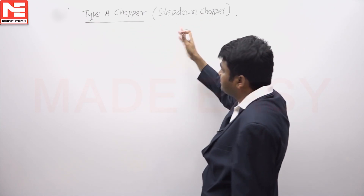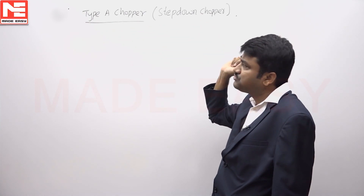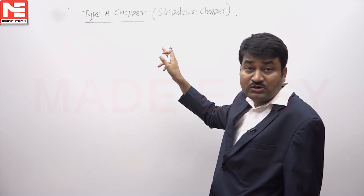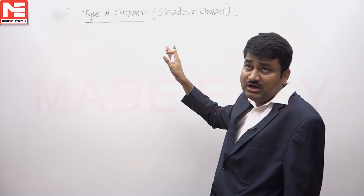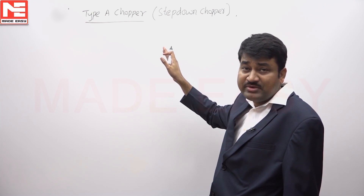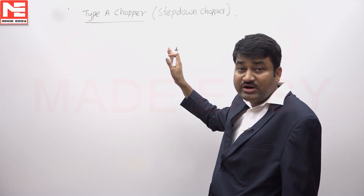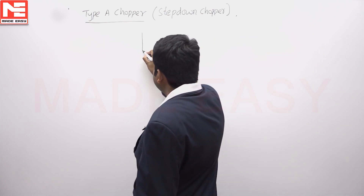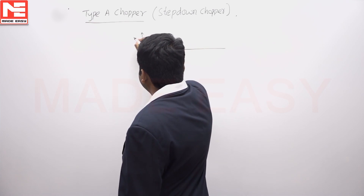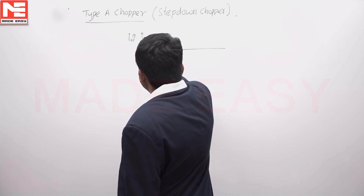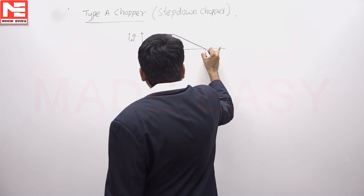A step-down chopper, also known as a Type-U chopper. We have to find the value of duty cycle at which the load current is just continuous. Load current is just continuous means the current waveform is at the boundary between continuous and discontinuous conduction. This is the current waveform at the boundary.